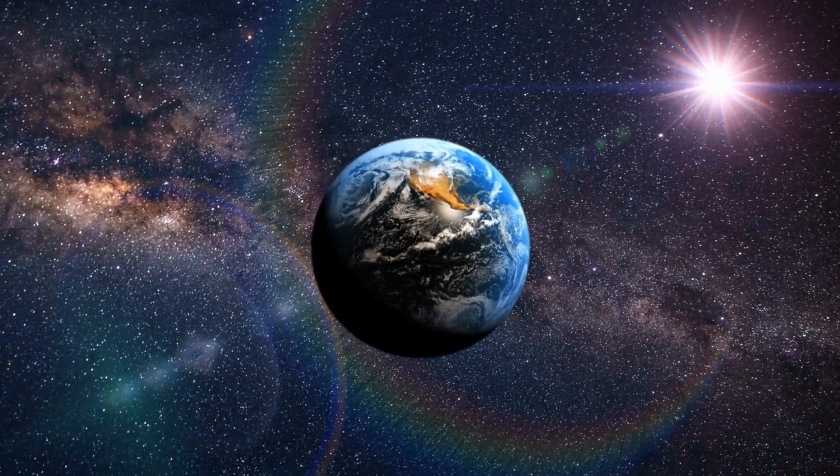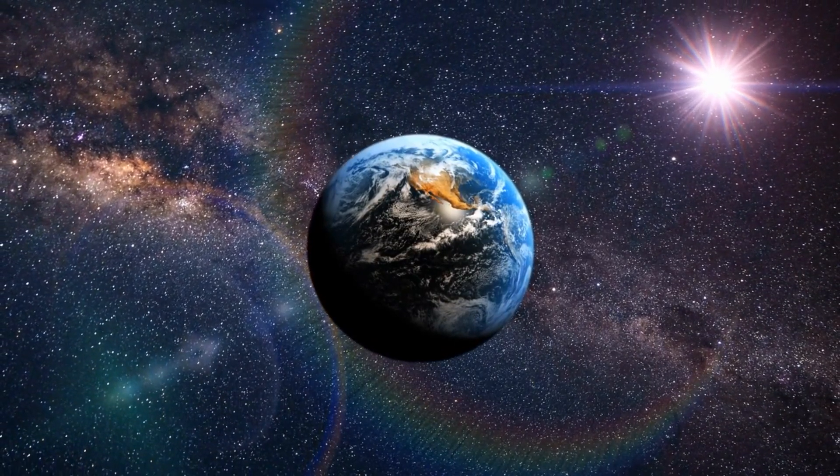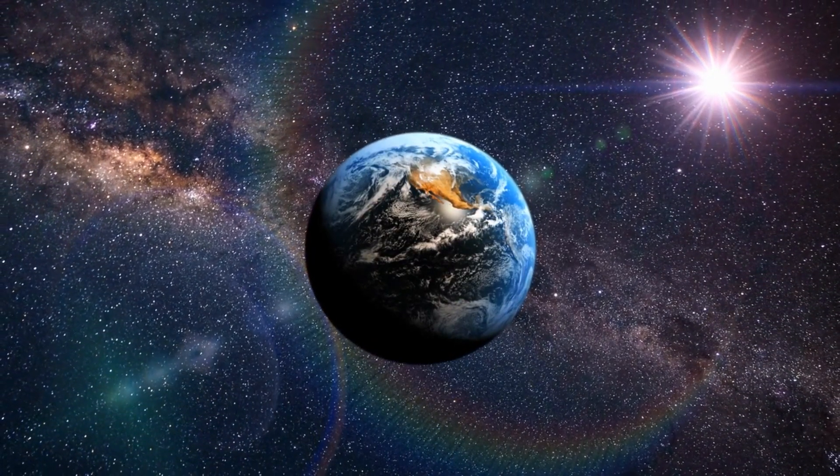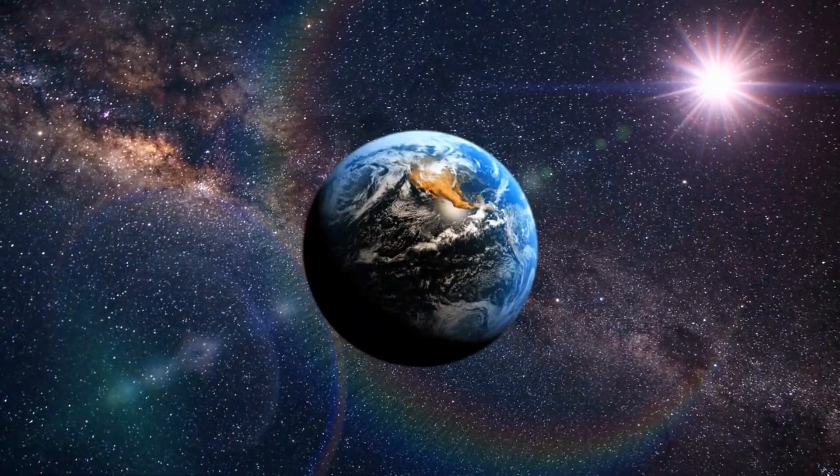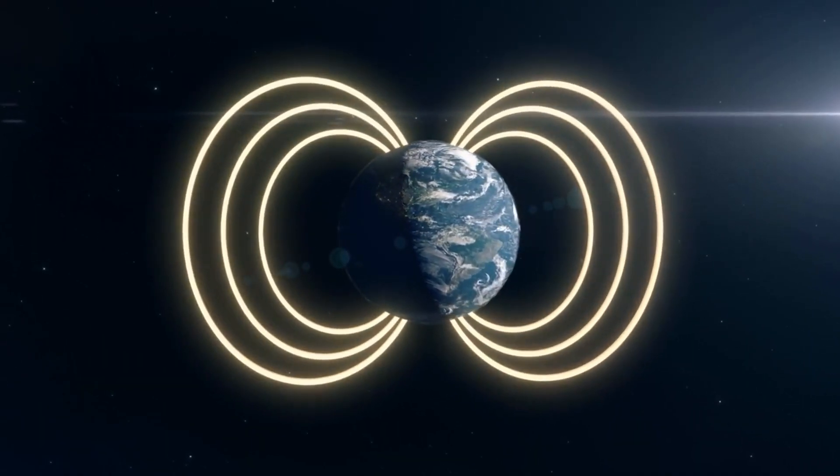The outer core is situated approximately 3,000 kilometers beneath the surface and is the only liquid layer of the Earth due to insufficient pressure to maintain a solid state. It primarily consists of iron and nickel, with traces of sulfur and oxygen.